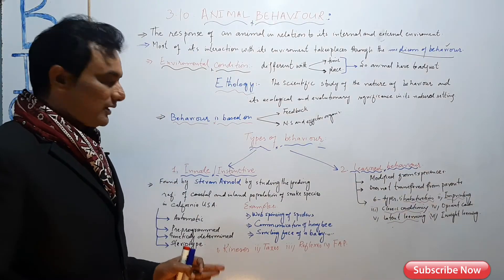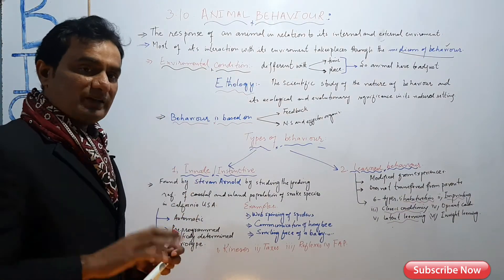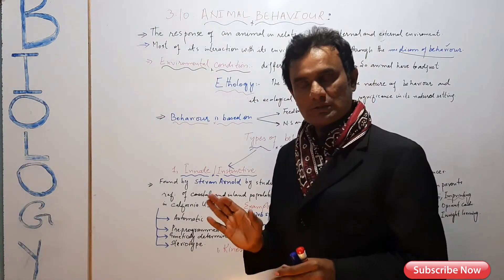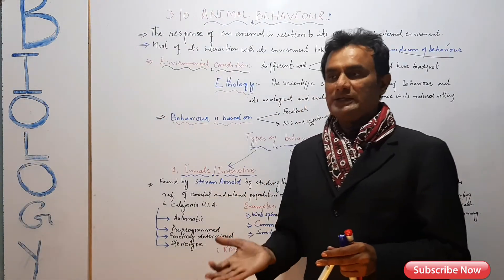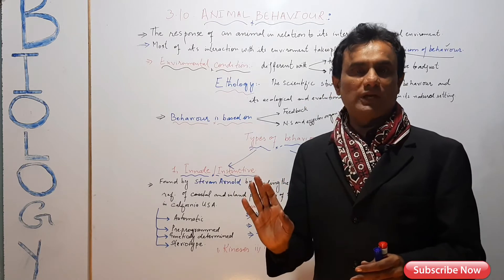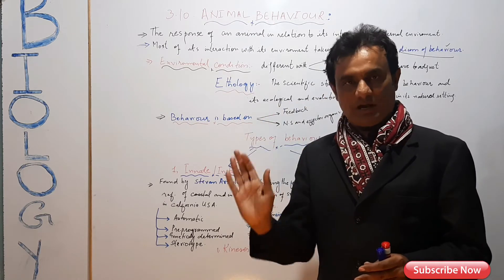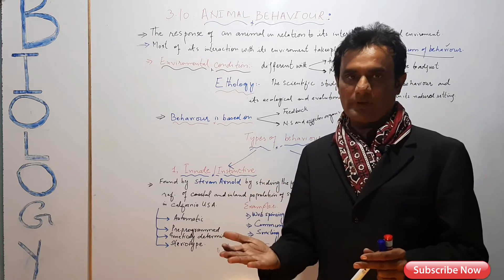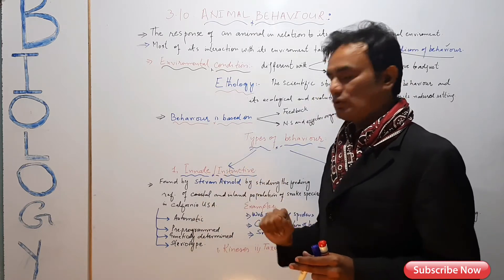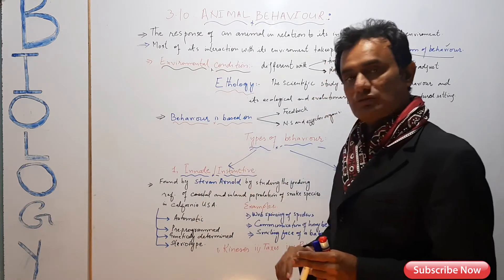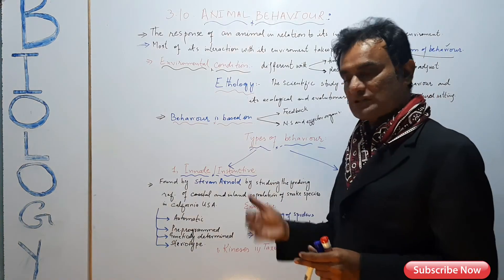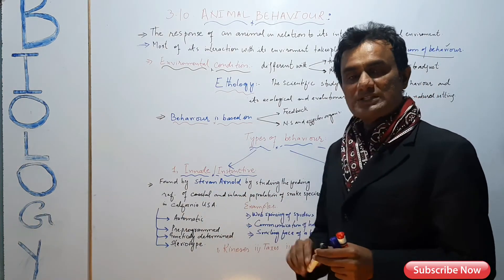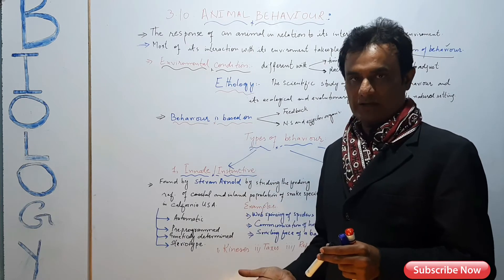Innate behavior does not need to be learned — it is already in the genes, already in the body, already in the nervous system. It was first introduced and studied by Steven Arnold, who first described this concept.